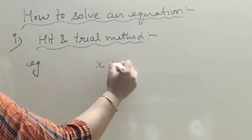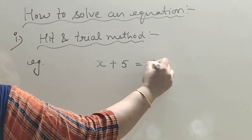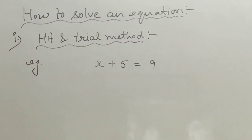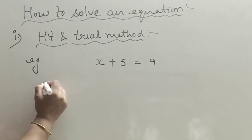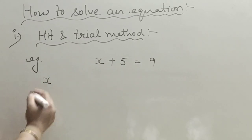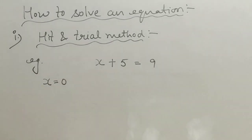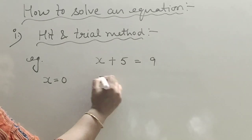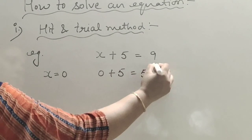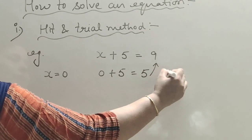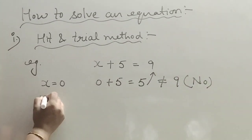For example, x plus 5 is equal to 9. We put different values of x. First, x equals 0: 0 plus 5 is 5, which does not equal 9, so this is not the solution. Then x equals 1: 1 plus 5 is 6, still not equal to 9.